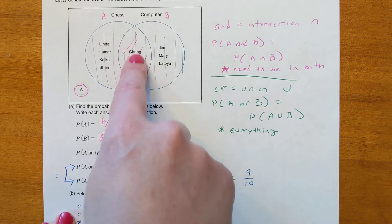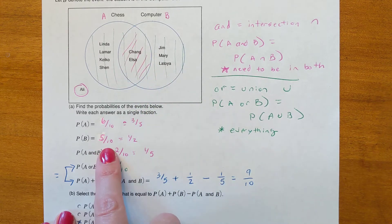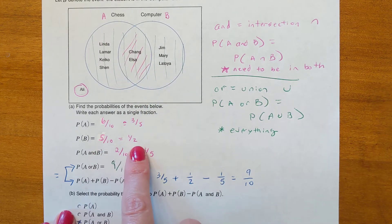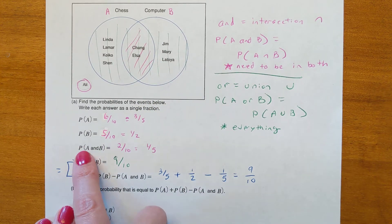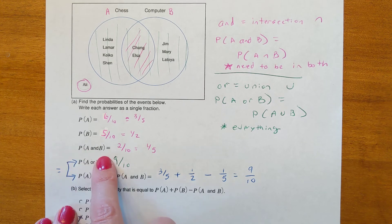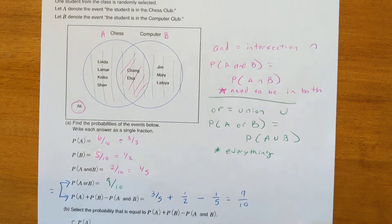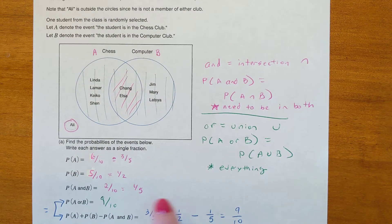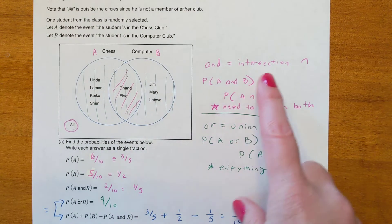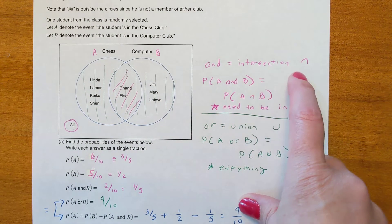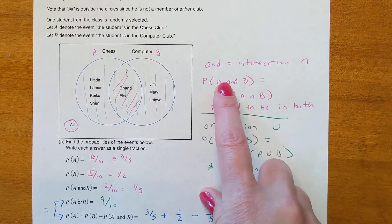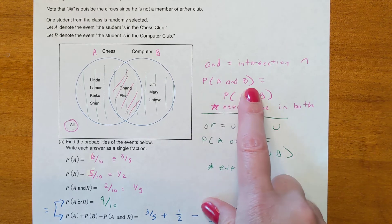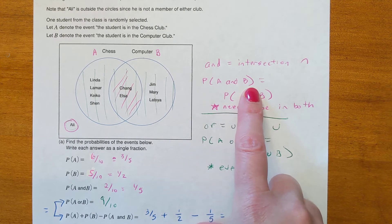The probability of B — being in circle B — there are five names in B out of ten, which reduces to one-half. The probability of A and B: the word 'and' means intersection, represented by an upside-down U, so we need the probability of A intersection B.